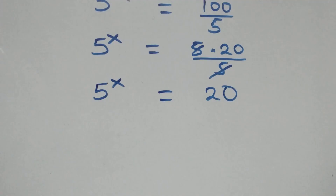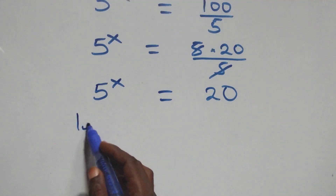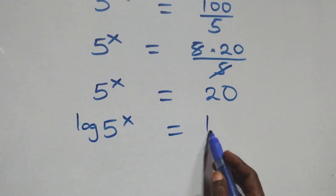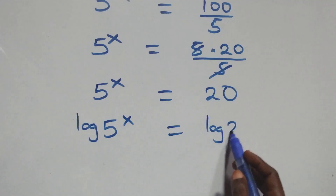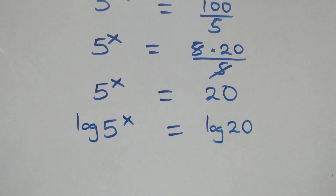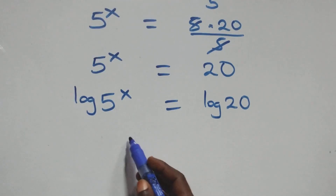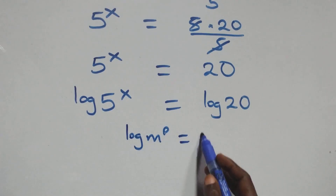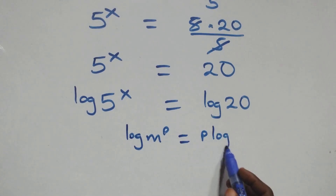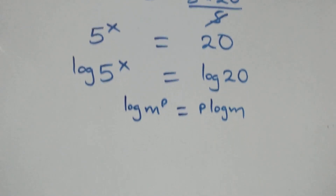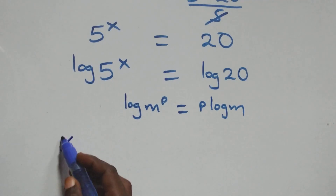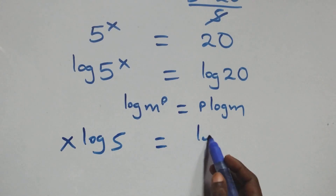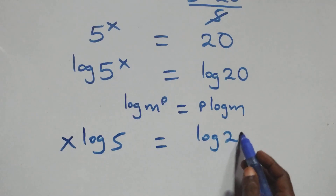The next step here: take the log on both sides. We have log of 5 raised to power x equals to log 20 on this side. We apply the power rule of logarithm, where log m raised to power p is the same thing as p times log m. Then what we have here becomes x log 5 equals to log 20 on this side.